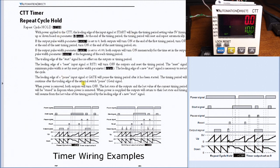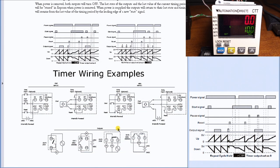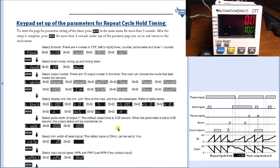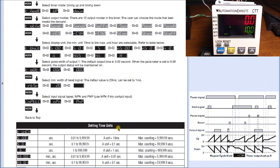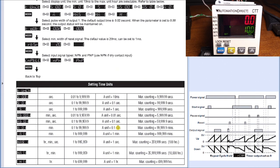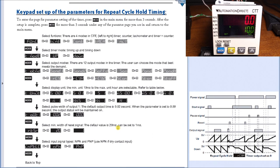The manual is broken down with a description of what actually happens, wiring diagrams, timing charts, instructions to program the unit, and setting time units. That's it - two pages to put this unit into repeat cycle hold timing.